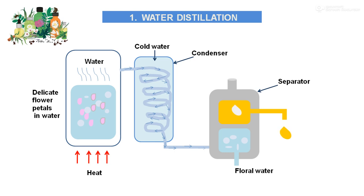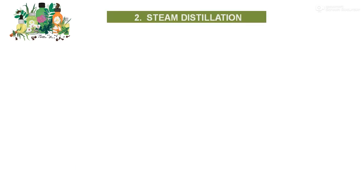From the lowermost part of the separator, we obtain the hydrosols and floral hydro waters, which are used in many industries. This is the simple method of water distillation. The next method is steam distillation.